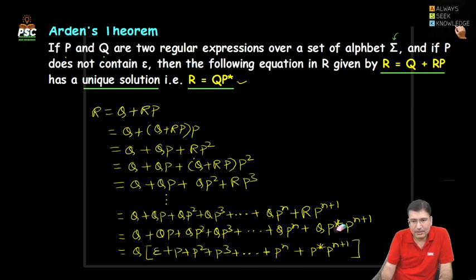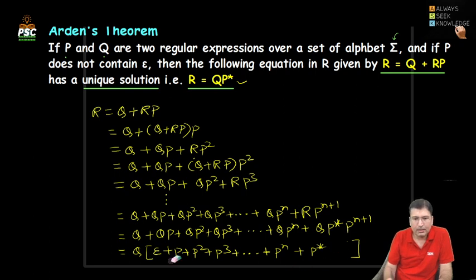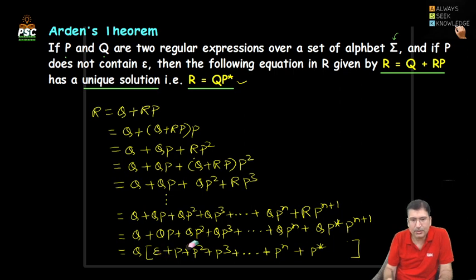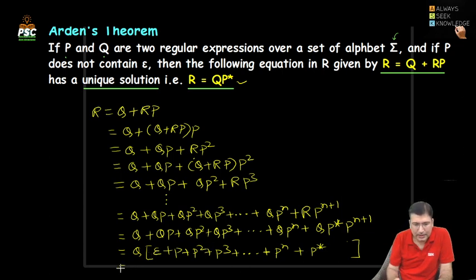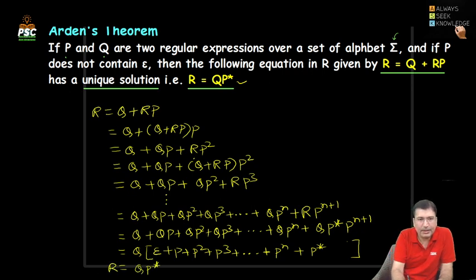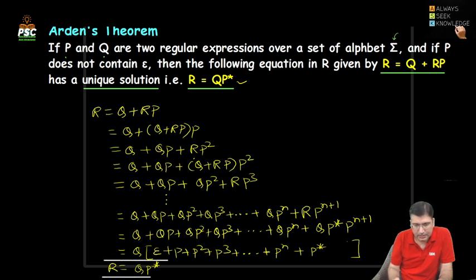So this overall series gives us P*, because epsilon, P, P², and all terms are subsets of P*. Therefore we can write Q · P*. So R ultimately equals QP*, which is exactly what Arden's stated.